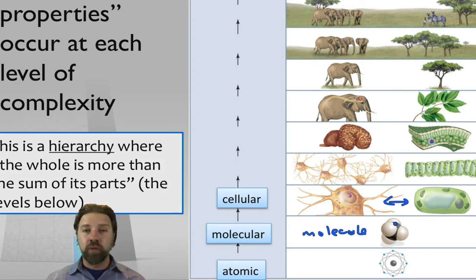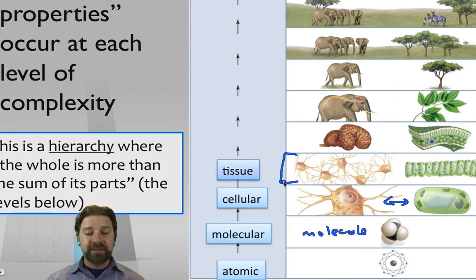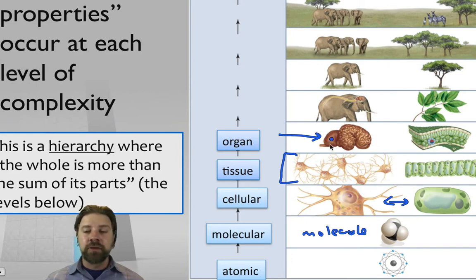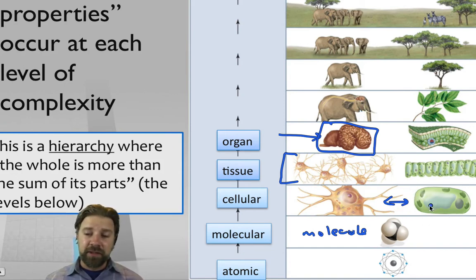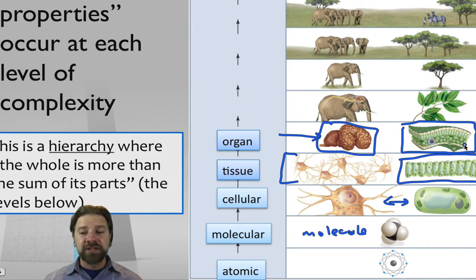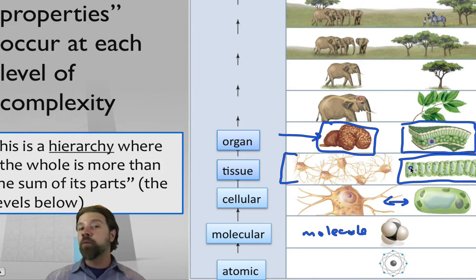Once you put together tissues that coordinate function you reach the organ level. For example: nerve cell → nervous tissue → the brain. On the plant side: a single cell → a layer of cells like the palisade layer → a cross-section of a leaf with palisade layer and spongy mesophyll working together for photosynthesis.